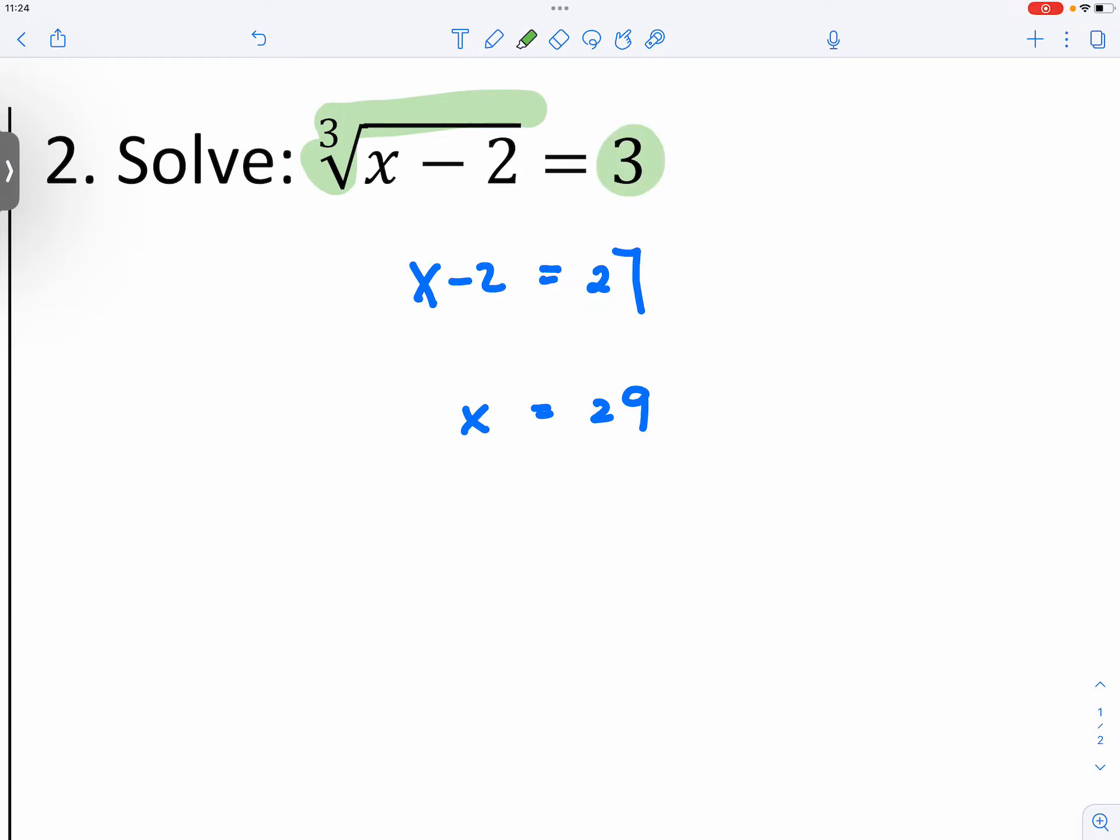You have a cube root of some number that gives you three. So that means the cube root of something that gives you three. That means you have to have cube root of 27. You have to have cube root of 27.